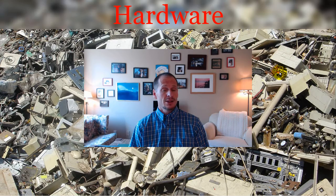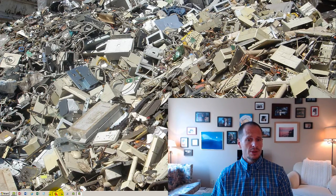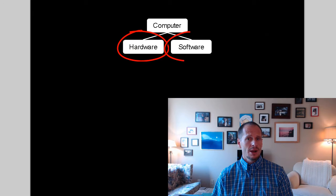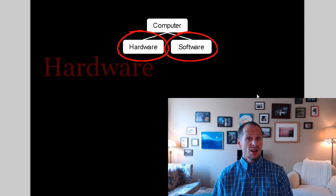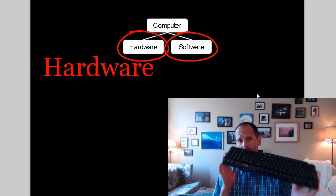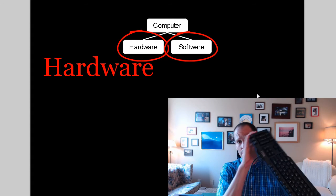So what exactly is hardware? One of the ways we think about computers, or one of the ways we define computers, is that we could say computers are a combination of hardware and software. These are really like two sides of the same coin. For a computer to work, it needs both hardware and software. Hardware is any of the physical componentry that computers are made up of.